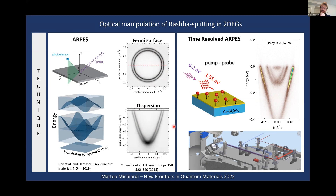The system we chose is bismuth selenide, a topological insulator — chosen not for its topological nature but because we can create very nice two-dimensional electron gases with Rashba splitting. The linear topological surface state serves as a control group. We create two-dimensional electron gases by chemical gating at the surface. They take the form of quantum well states: the first has a strong Rashba splitting and the second is just barely visible below the Fermi level with few electrons.